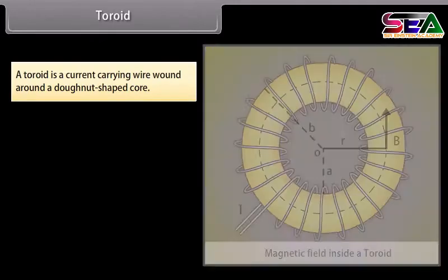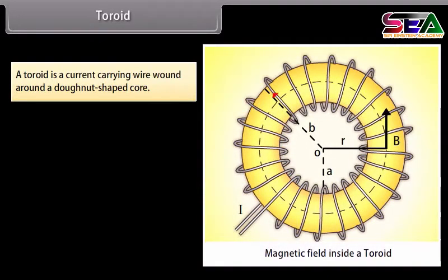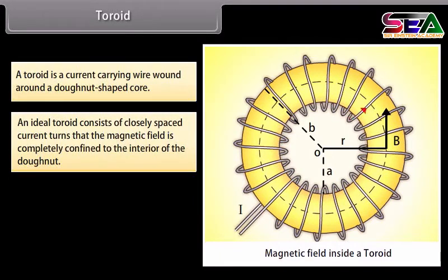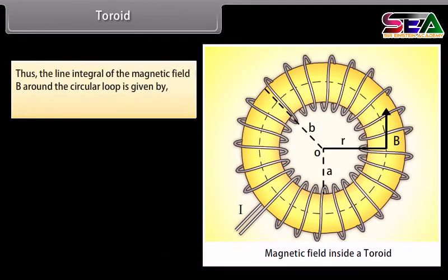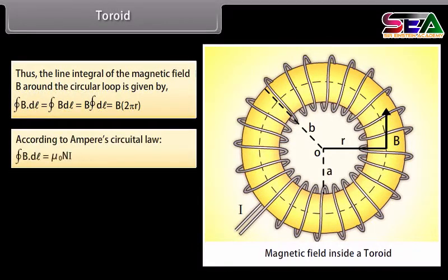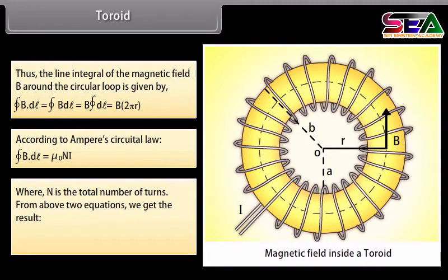Toroid: A toroid is a current-carrying wire wound around a doughnut-shaped core. An ideal toroid confines the magnetic field completely to the interior of the doughnut. By symmetry, the magnitude of B is the same at all points on a circle of radius R, directed tangentially. The line integral of B around the circular loop equals B times 2 pi R. By Ampere's circuit law, closed integral of B dot dL = mu nought N I, where N is the total number of turns. Thus, B = mu nought N I / (2 pi R).